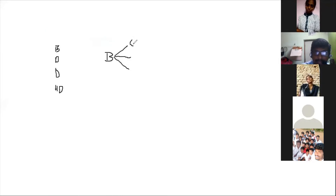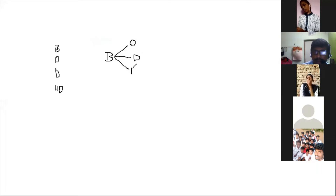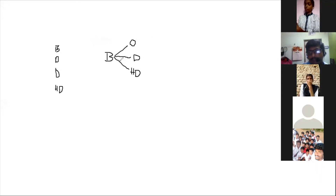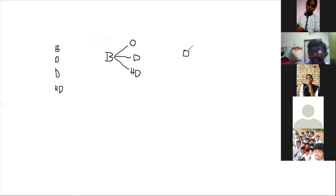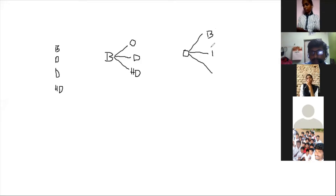So binary conversions include: binary to octal conversion, binary to decimal conversion, and binary to hexadecimal conversion. Moving on to octal — from octal, we can convert to binary, octal to decimal, and octal to hexadecimal.